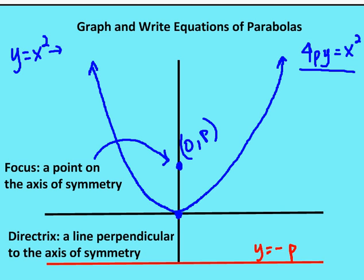We're going to move from an equation of a parabola as y equals x squared to the form 4py equals x squared. The value p is the distance along the axis of symmetry from the vertex into the parabola, and that point is the focus. So the focus is at the point (0, p). The directrix is p units from the vertex in the opposite direction, so the equation of that line will be y equals negative p.